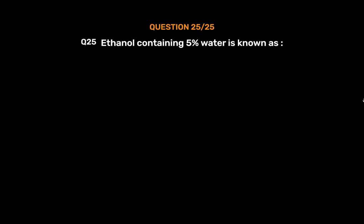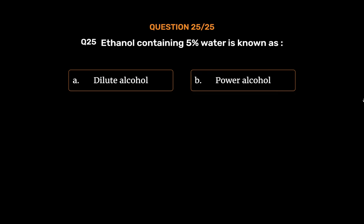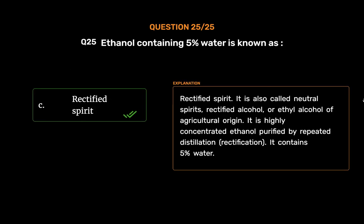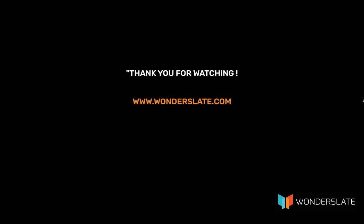Question No. 25. Ethanol containing 5% water is known as: Option A. Dilute alcohol. Option B. Power alcohol. Option C. Rectified spirit. Option D. Absolute alcohol. The correct answer is Option C, Rectified spirit. Rectified spirit, also called neutral spirits, rectified alcohol, or ethyl alcohol of agricultural origin, is highly concentrated ethanol purified by repeated distillation (rectification). It contains 5% water. Thank you for watching the video.